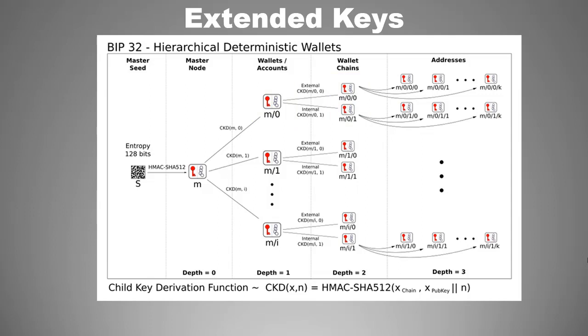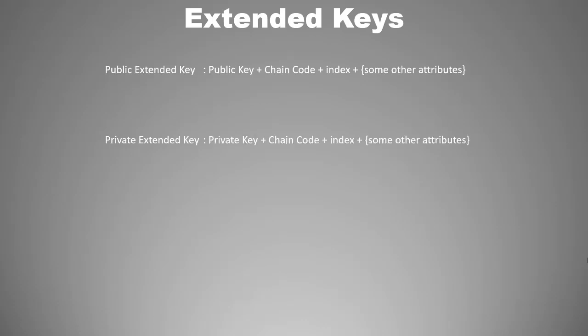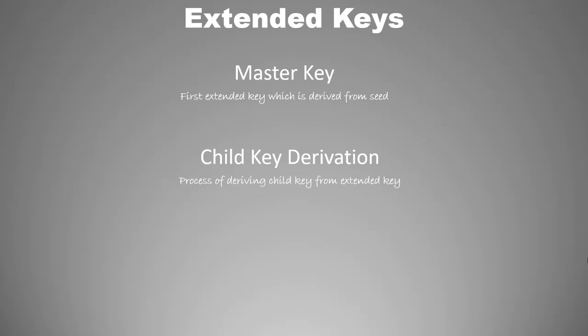You already know that a key can be private or public. Similarly, an extended key can also be a public extended key or a private extended key. A public extended key is a pair of public key and chain code, and a private extended key is a pair of private key and chain code. The first extended key derived from the seed is called the master key, and then subsequent keys are derived from their parent keys. The process of deriving a child key from a parent key is called child key derivation, or CKD. Note that the master key is also an extended key — there is no difference except that it is the first key and is derived from seed.